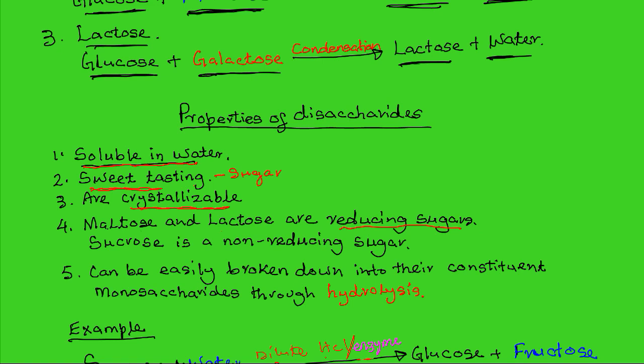In other words, they reduce the copper from oxidation number two to one — hence they are reducing agents, just like the monosaccharides. However, sucrose is a non-reducing sugar. That is, if heated with Benedict's reagent, there will be no color change from blue, because unlike maltose and lactose, sucrose does not react with Benedict's reagent.